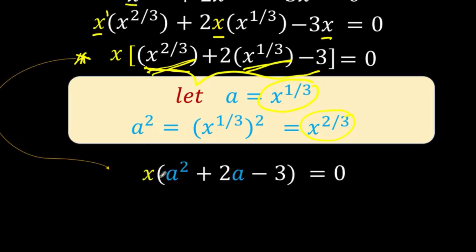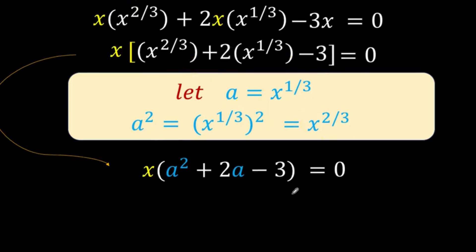We copy x. Instead of x raised to 2 thirds, we use our substitution a squared. And instead of x raised to 1 third, we use our substitution a. We copy the 2, copy the minus 3, and copy equals 0.